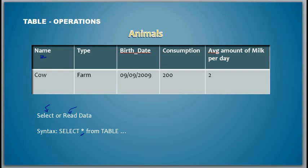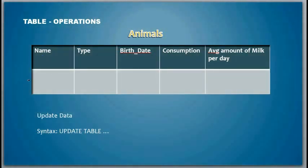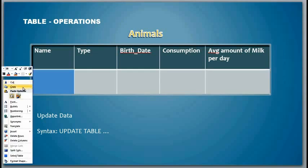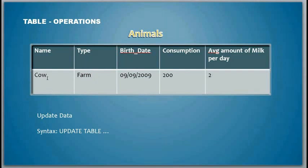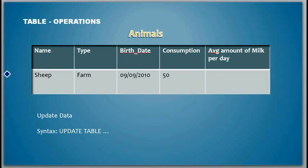After inserting I'm selecting. The next operation would be to update the data. Let's say if I want to change data—let's say I want to change this cow to sheep, and then its birth date is different and it consumes 50 calories. So what did I do? I updated the data. The data was already there and I updated it. So the syntax is update table and then you pass in some criteria to update it.